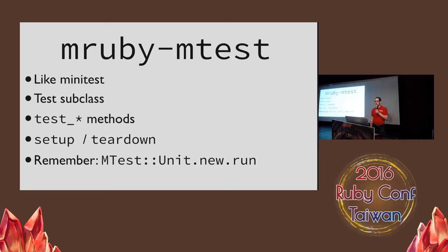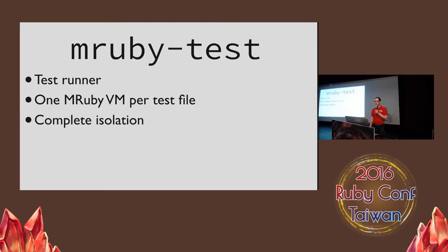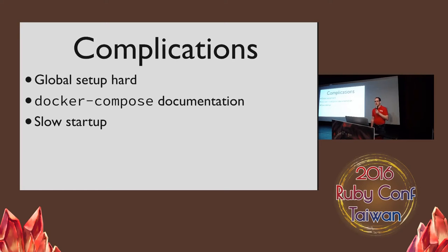The mruby-mTest gem is very much like the MiniTest library that ships with CRuby. You make a subclass of the test class, write test methods the same as in MiniTest, and there's a setup and teardown method for common test setup. But you have to remember to start running the tests with MTestUnit.new.run at the bottom of your test case, since mruby doesn't have at_exit without an extra gem. Since mruby is compiled, you can't run the test directly — instead, you have to use the mruby-test gem, which provides a test runner. When the tests run, a new mruby VM is created for each test file, providing complete isolation. The design of the test runner has some complications. The first is that creating a global test helper requires setting the test preload option in your mruby gem specification. Without this, the helper won't be available to any of your tests because mruby sees it as a separate test file, and I'm still working on integrating this into my project.